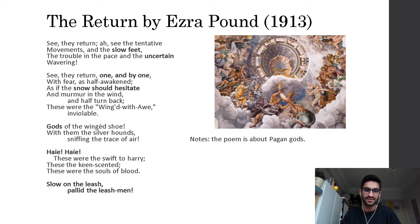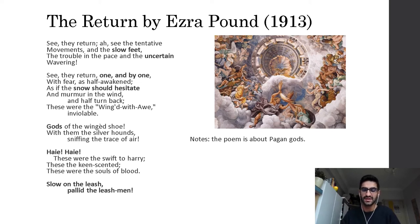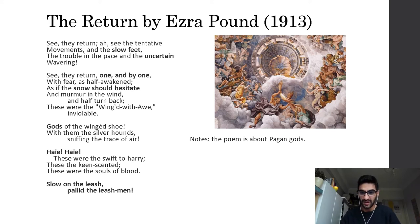At the last two lines: 'Slow on the leash, pallid the leash-men.' The speaker compares man and the gods, saying we don't need pagan gods because men are themselves cruel. The pagan gods had rough and horrifying rules to punish people. The speaker says we actually don't need pagan gods to come back because men are horrible enough — we are ourselves the pagan gods, since we destroy each other and destroy humanity.